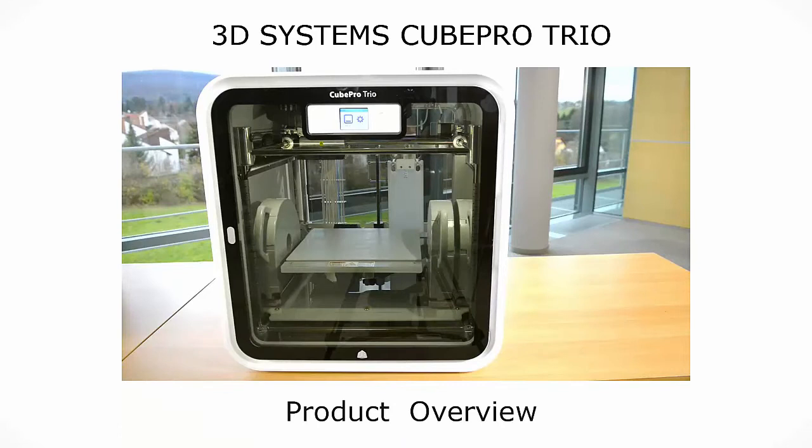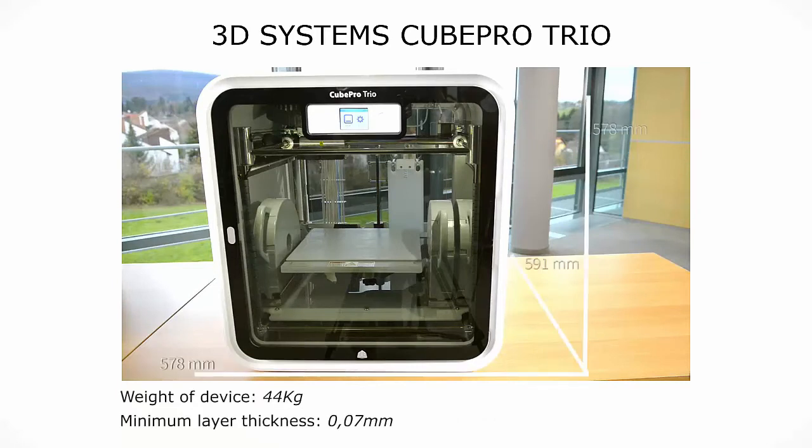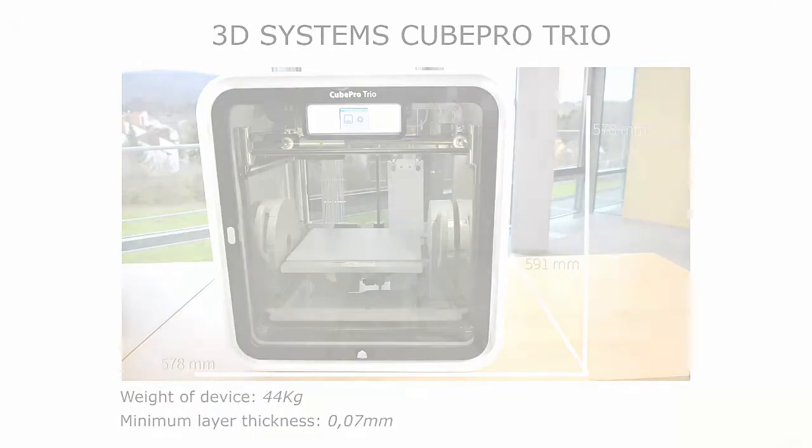The Cube Pro features a small touch screen panel, and has a modern and aesthetically appealing look and feel. Dimensionally, as mentioned before, similar in footprint, but certainly smaller in height than the Uprint SE.